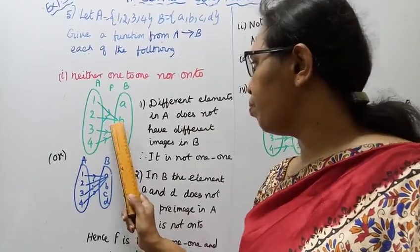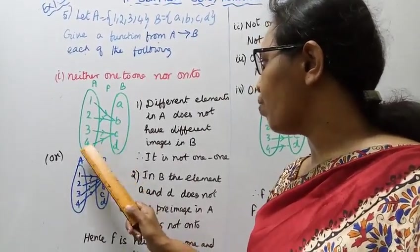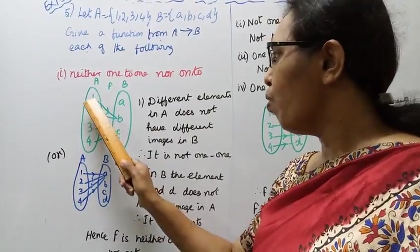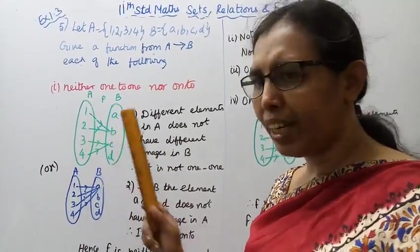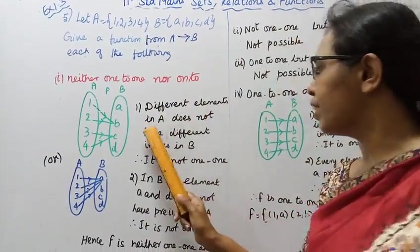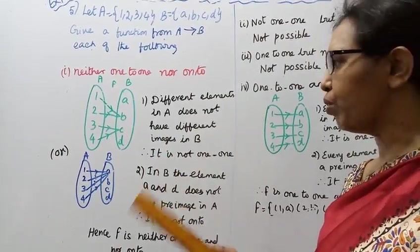For 1, the image is B. For 2, the image is B. For 3, it's C. For 4, it's C. So not every element has a different image. Different elements in A do not have different images in B. Therefore it is not 1-to-1.